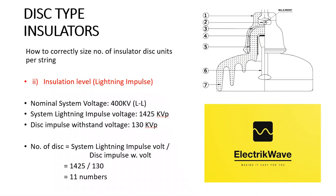Here we will calculate the number of insulator disk units per string based on insulation level. Nominal system voltage is 400 kV line to line. System lightning impulse voltage is 1425 kV peak. Disk impulse withstand voltage is 130 kV peak. The formula: number of disks per string = system lightning impulse voltage divided by disk impulse withstand voltage. This gives a requirement of 11 disks per string.